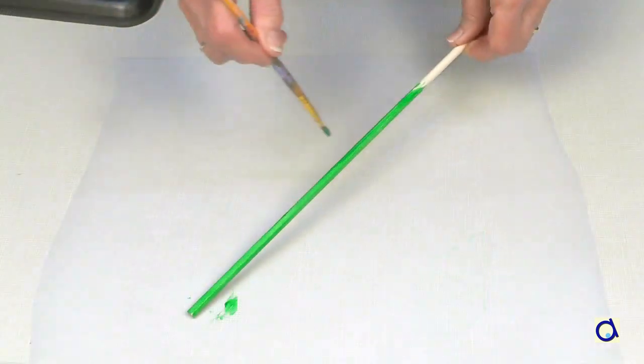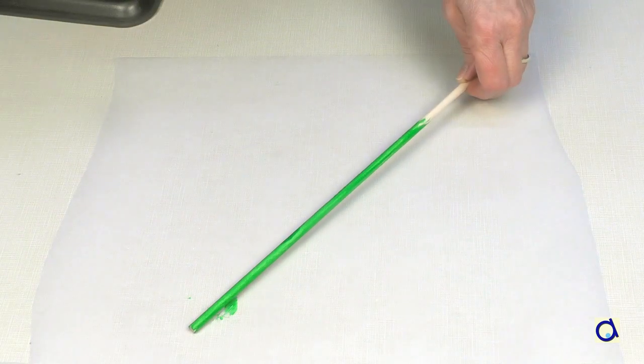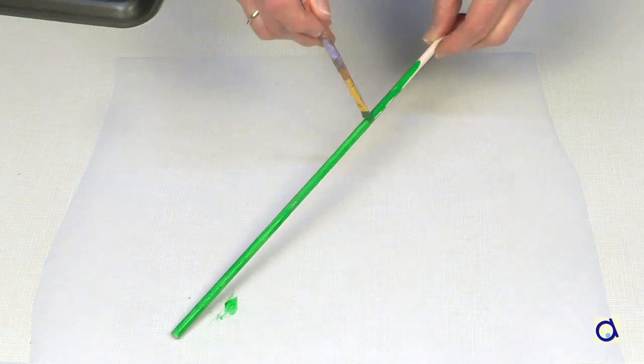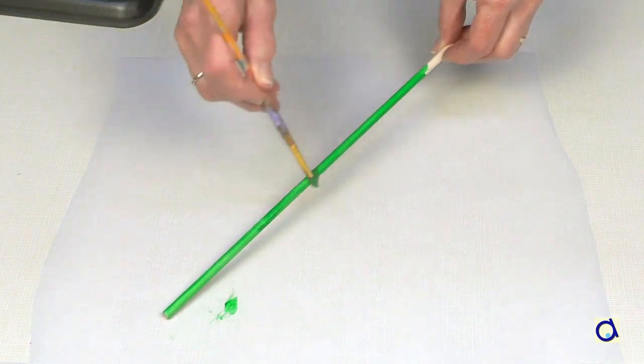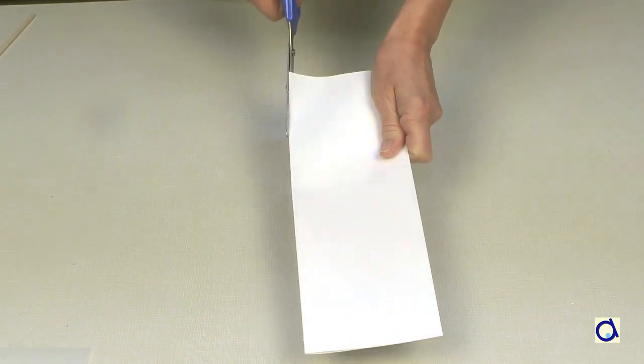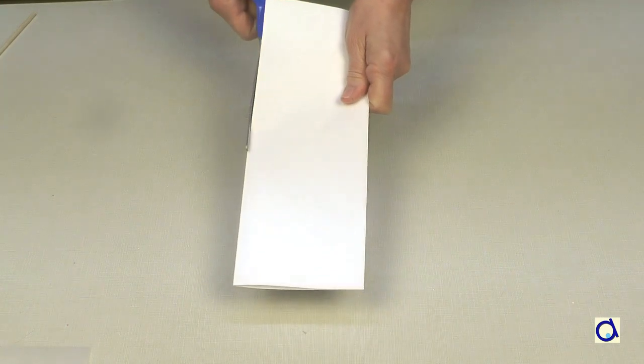For the stem, you can take a thin wooden dowel that you paint in green. For a large group, the cost of wooden dowels can be a challenge. Instead of using wooden dowels, you can use a regular sheet of paper and cut it in half lengthwise.